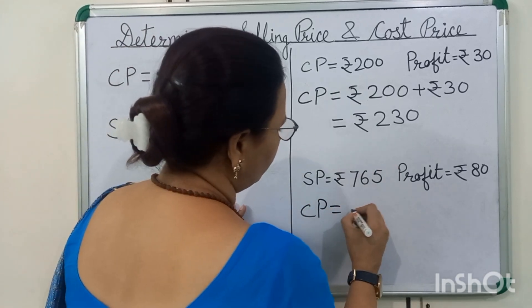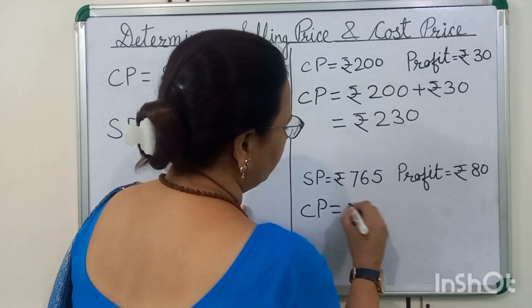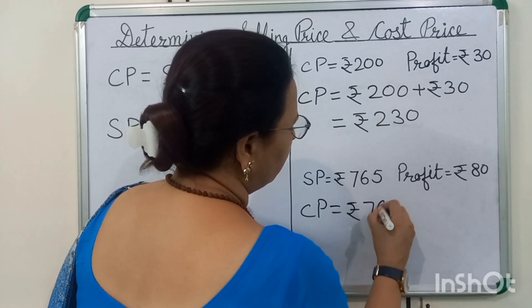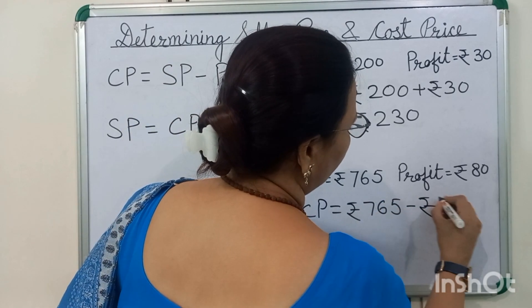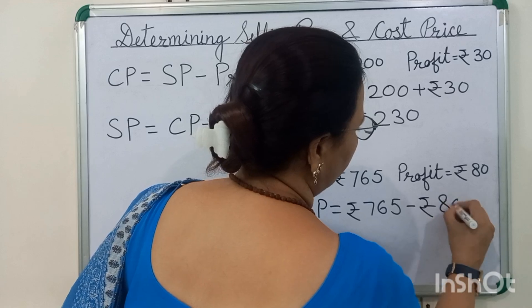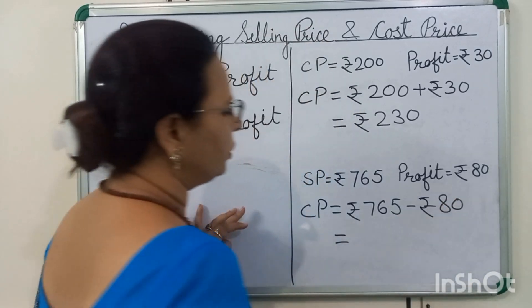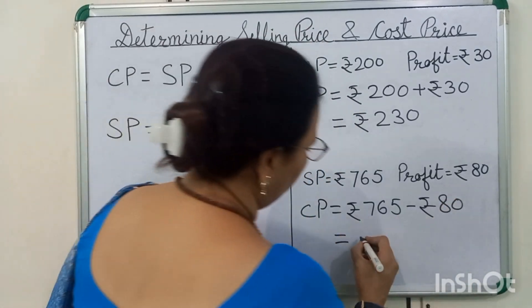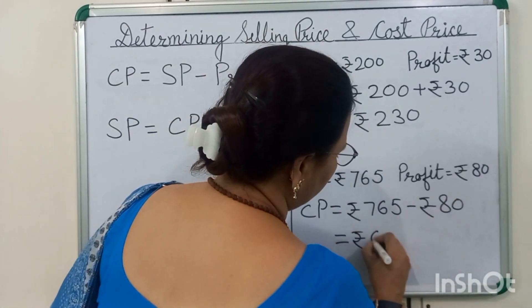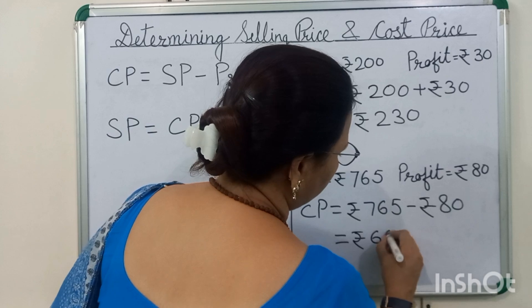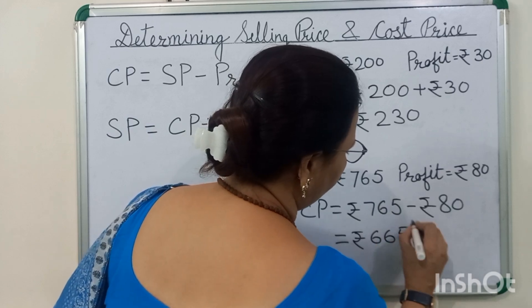Cost price is equal to Rs. 765 minus Rs. 80. When we subtract, we get 665.